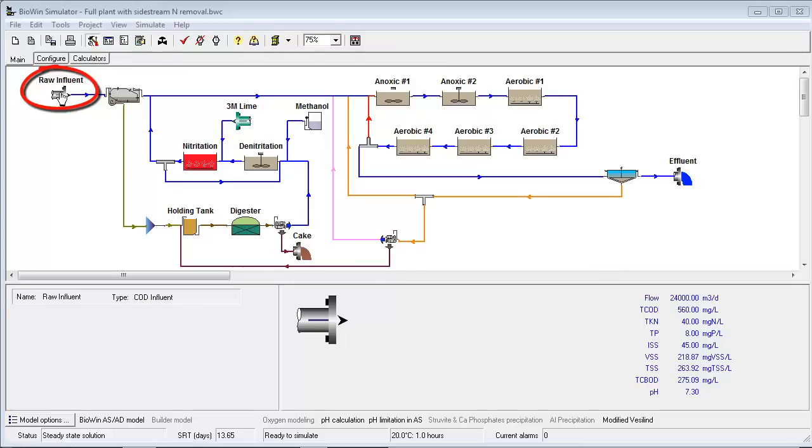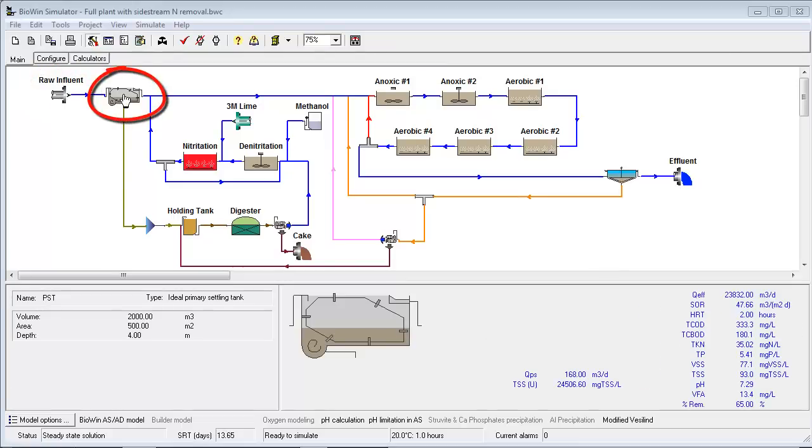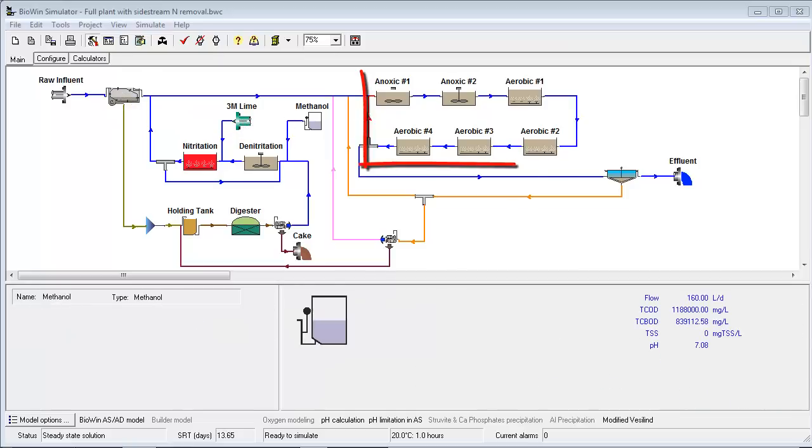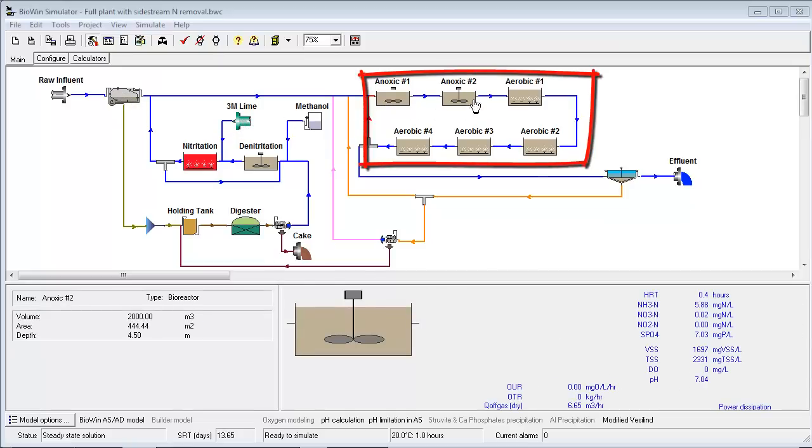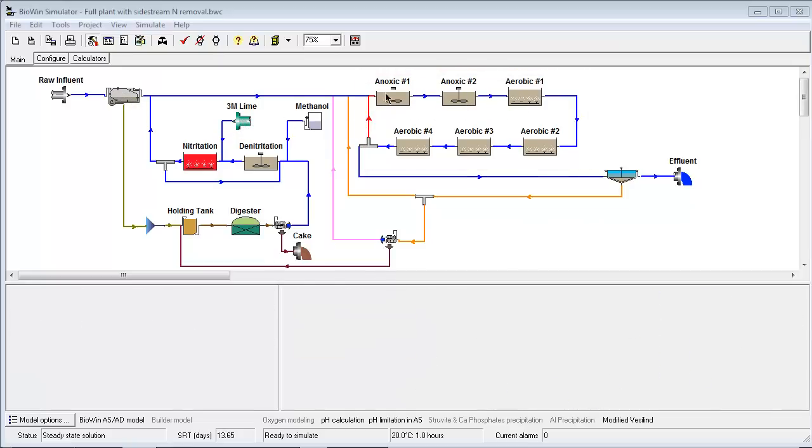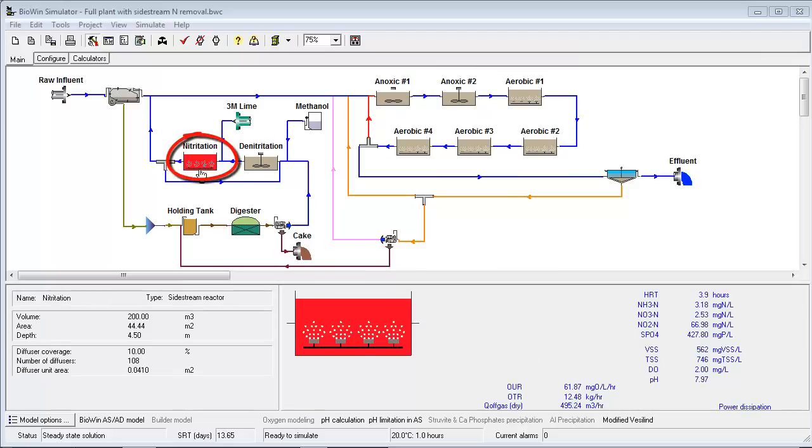Like an influent model, or a primary settling tank model for physical settling of solids. We have biological models in flow sheet elements such as bioreactors, sidestream treatment reactors, and anaerobic digesters.